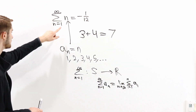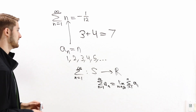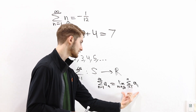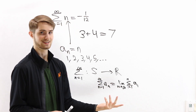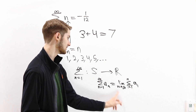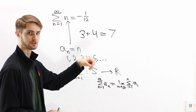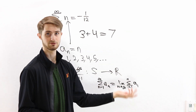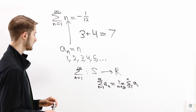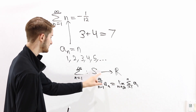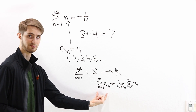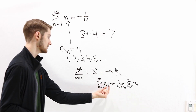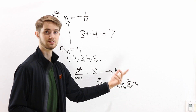If we consider the sequence a sub n equals n and plug it into this function, what we get is that the result does not exist, because this limit is not defined. We take 1 plus 2 plus 3 plus 4 and so on — that limit doesn't converge to any number. So using this specific definition of the infinite sum function, we can say that this sequence isn't in the domain, or that the output does not exist.